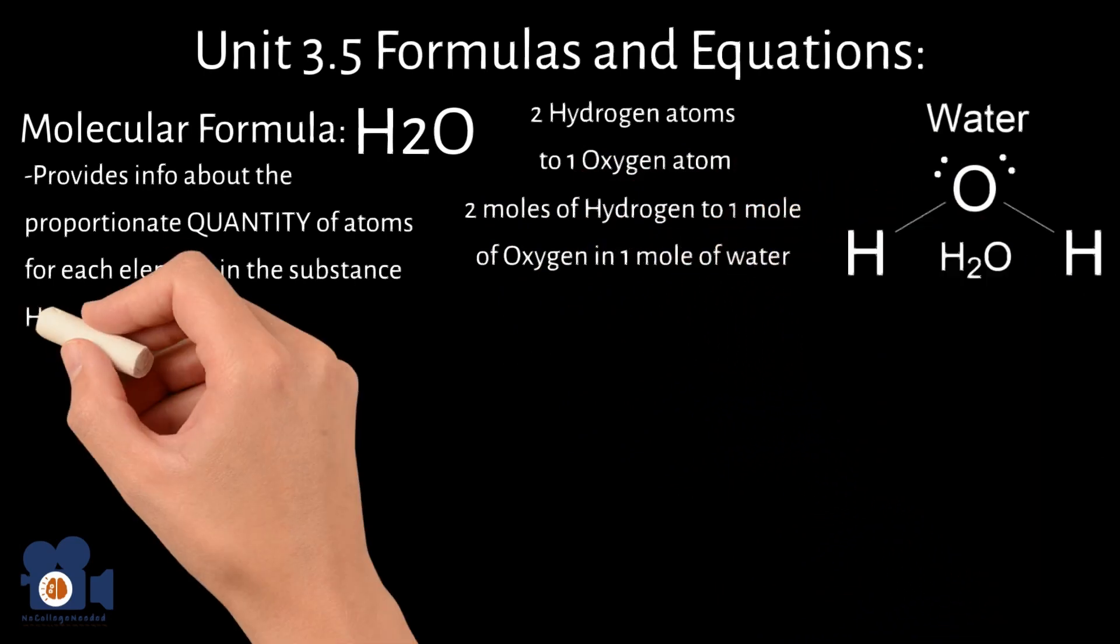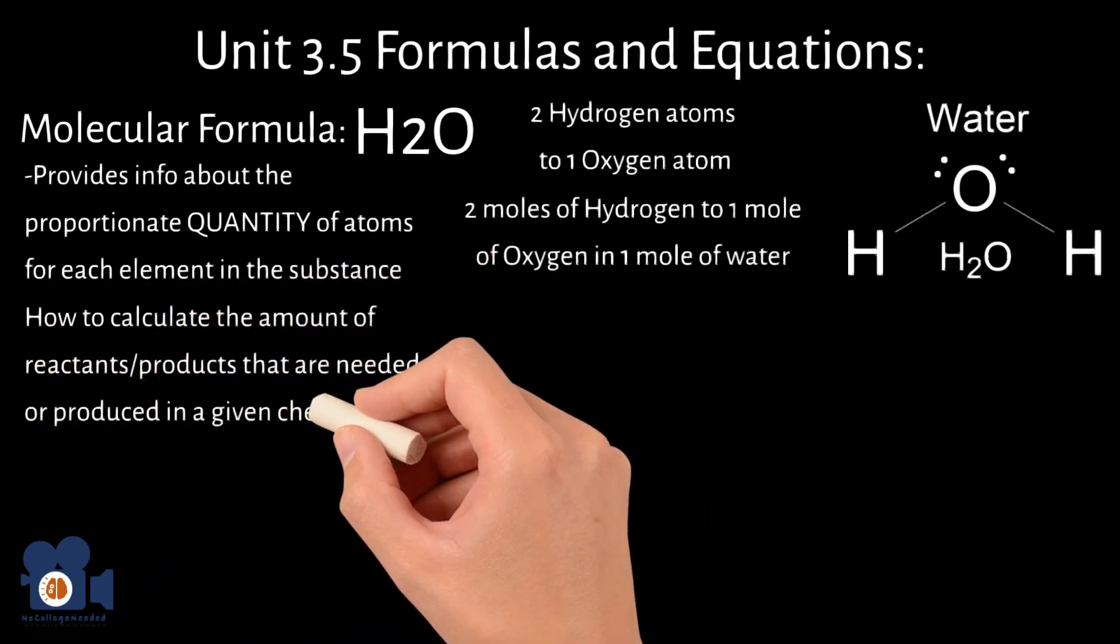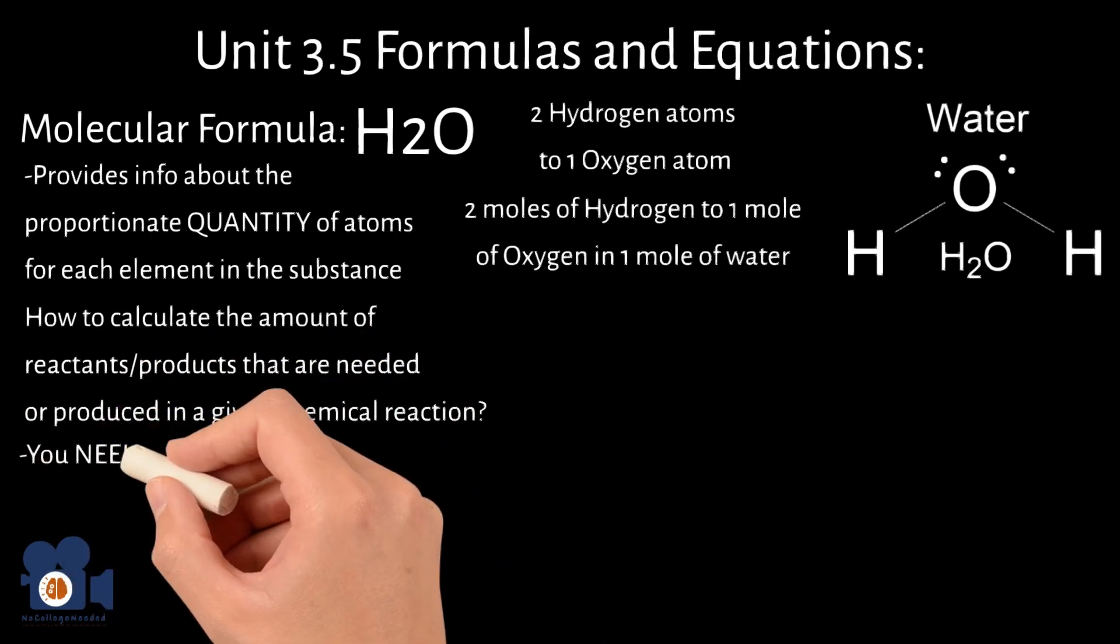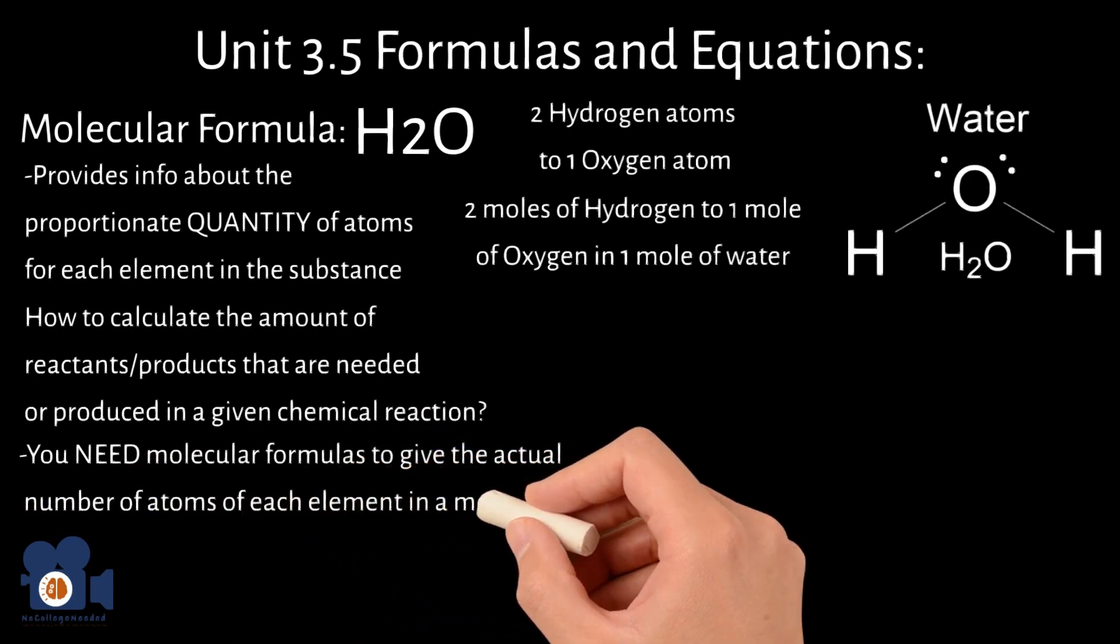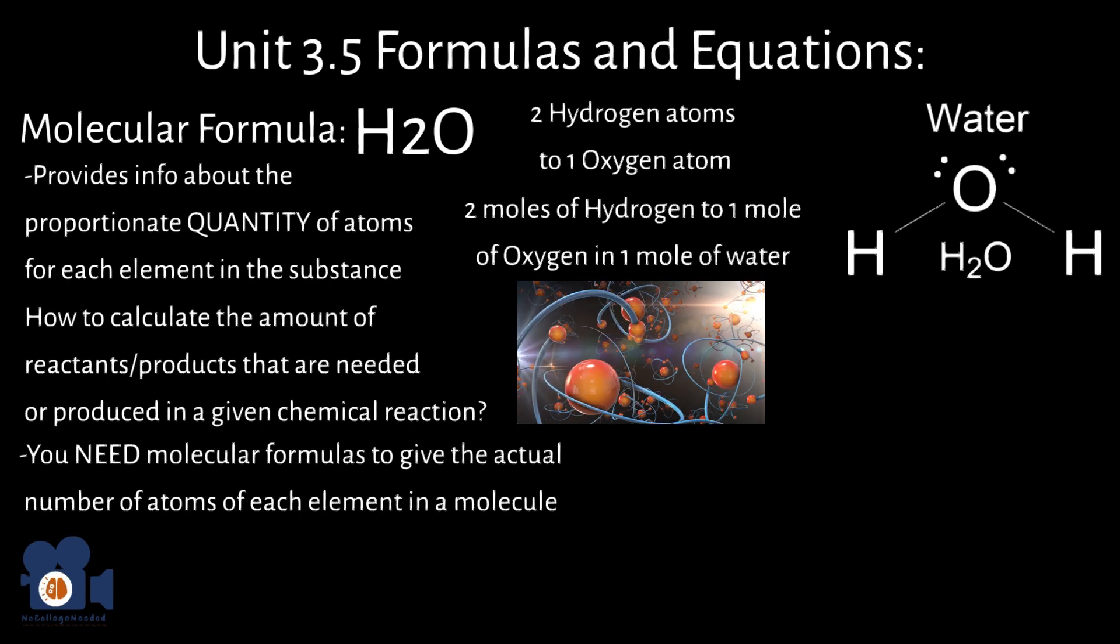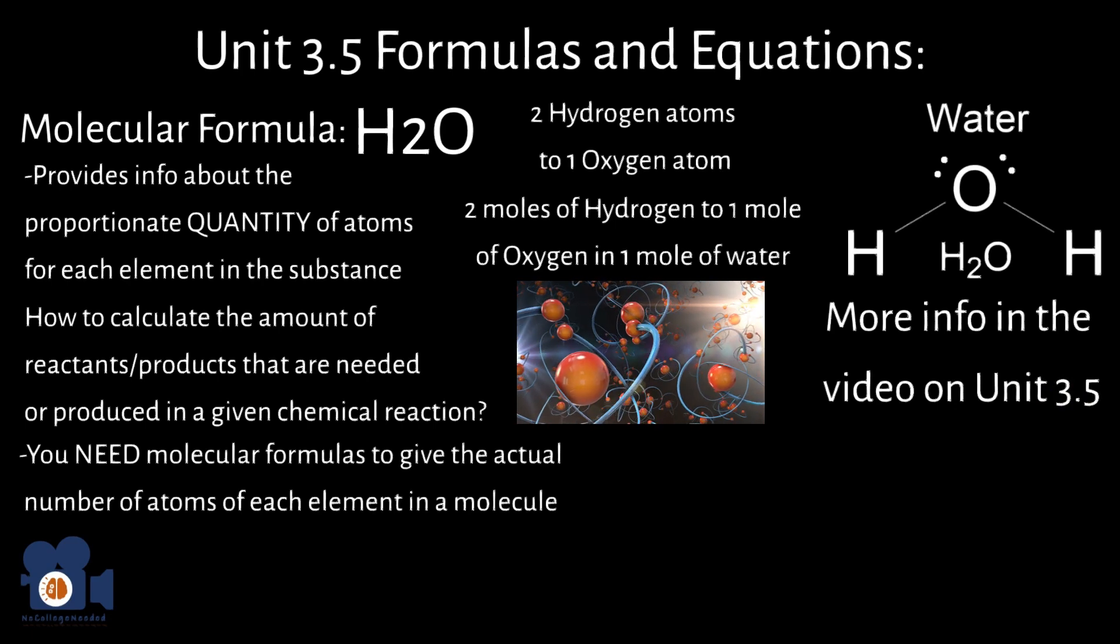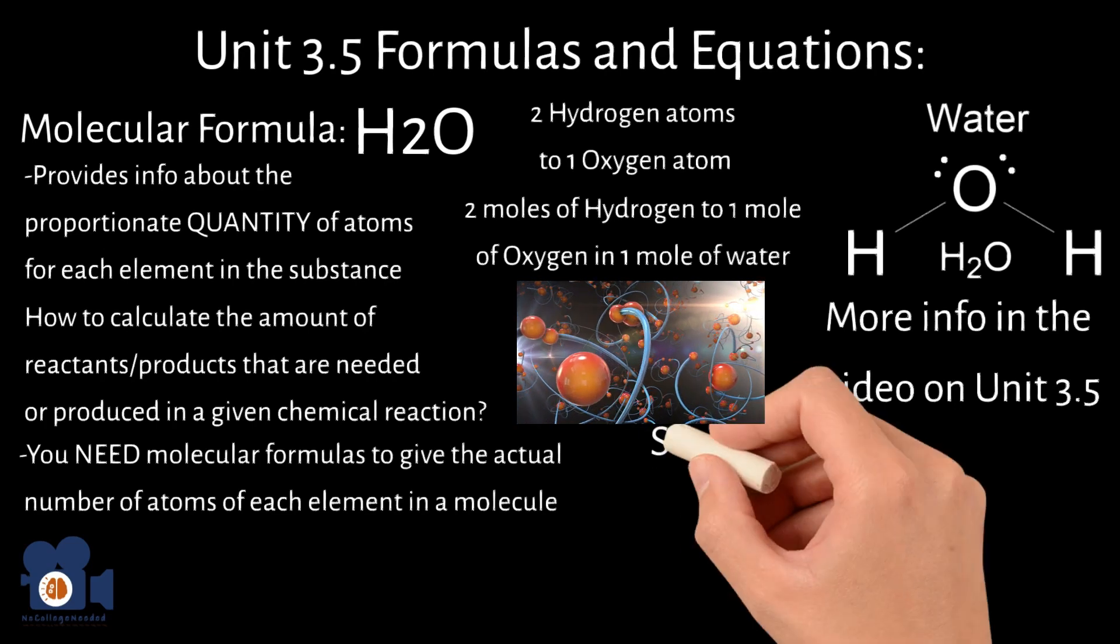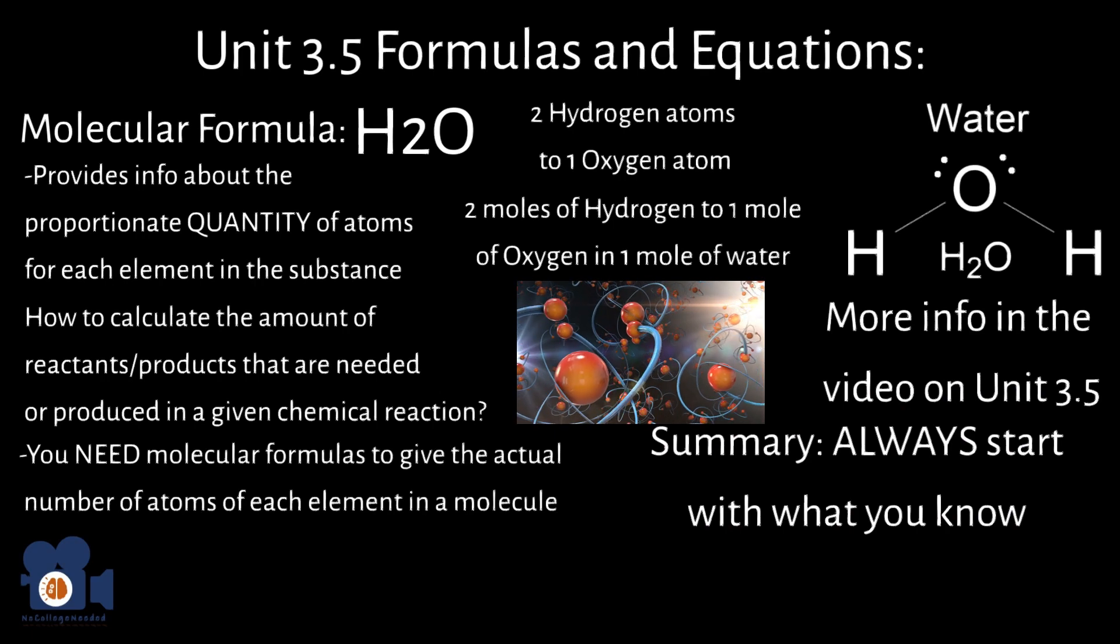One of the most fundamental equations you'll need to solve for as a chemist is how to calculate the amount of reactants or products that are needed or produced in a chemical reaction. To answer this, you need the molecular formula that gives the actual number of atoms of each element in a molecule for each of the reactants and products. For an in-depth calculation, please check out the video on Unit 3.5 to see how you would calculate the amount of starting materials needed to synthesize 5 kg of the anesthetic lidocaine. For summary and brevity, you always start with what you know, and in this case, it was the 5 kg of lidocaine, and then convert that to moles using the molecular weight.